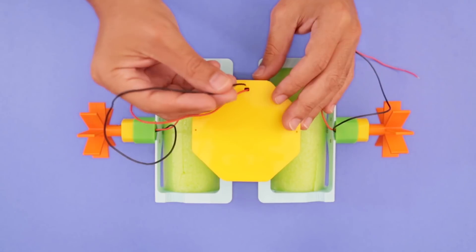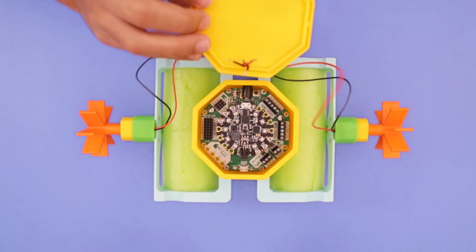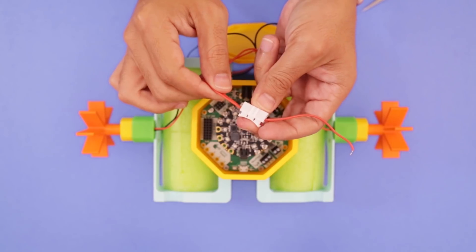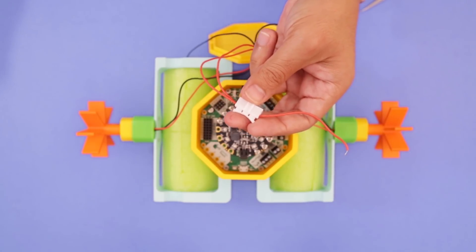Now we can thread the motor wires through the opening in the top of the cover and pull them all the way through. We can skip soldering and use this 2 pin wire joint to tie our wires together.